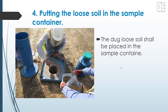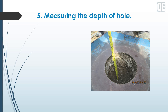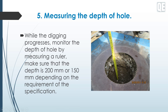Number five: measuring the depth of the hole. While digging progresses, monitor the depth of the hole by measuring with a ruler. Make sure that the depth is 200 mm or 150 mm depending on the requirement of the specification — this is very critical. If the depth is not yet achieved, continue digging until it reaches the desired or required depth.